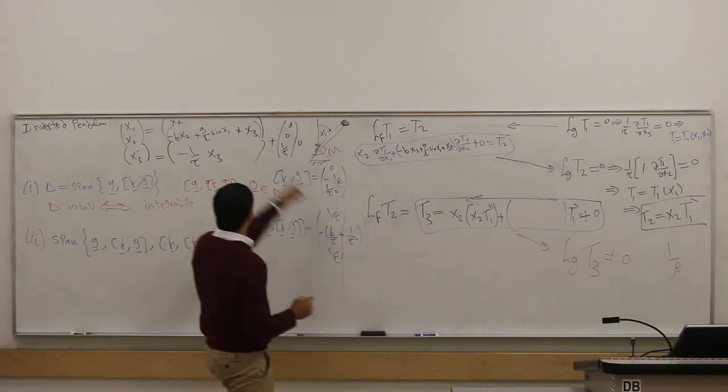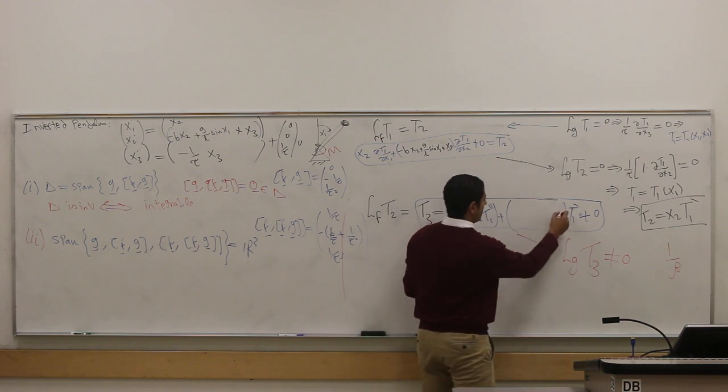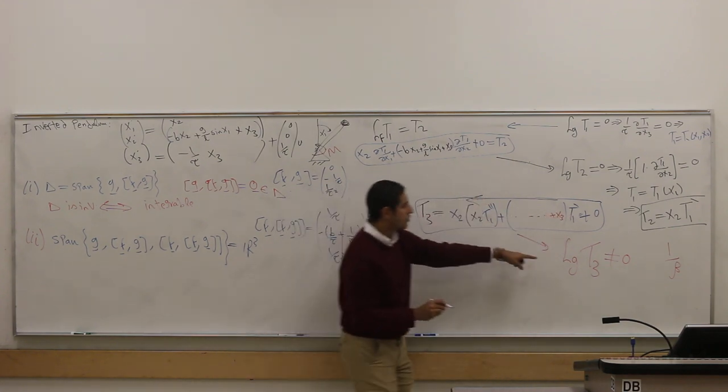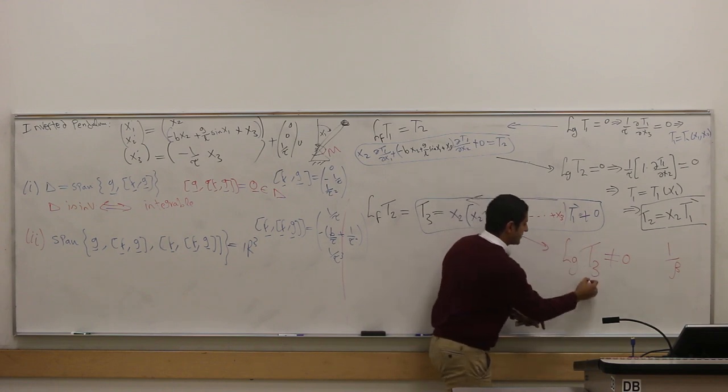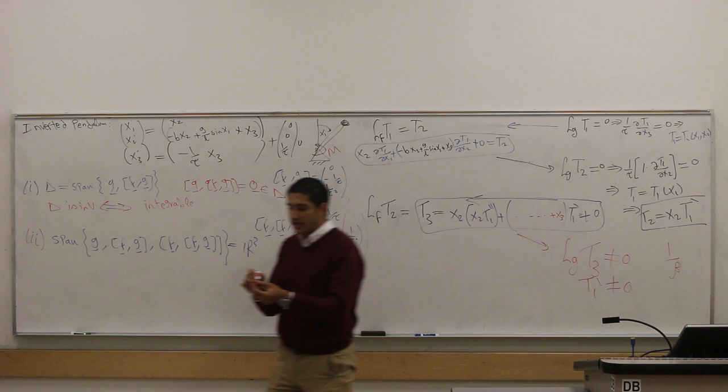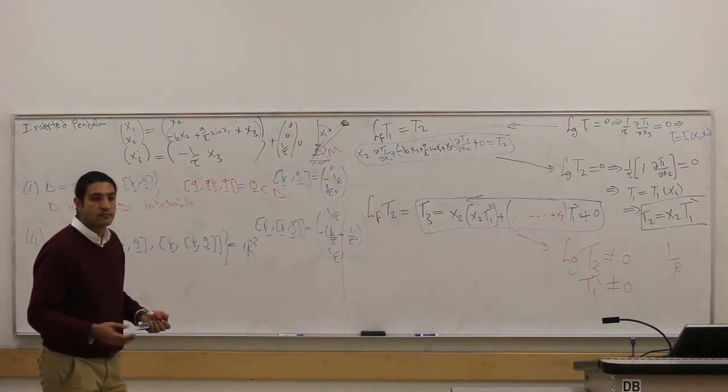Let's differentiate this guy along g, which means just along x3. I have one x3 here, so this is just t1 prime. So the end result is that t1 prime should not be 0. Choose any t1 such that t1 prime is not 0.